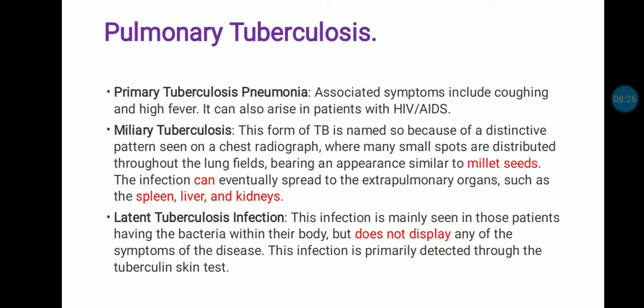The third type under pulmonary TB is latent tuberculosis infection. This infection is mainly seen in patients who have bacteria within their body but do not display any symptoms of the disease. It is primarily detected through the tuberculin test only, because symptoms are not present. All three types are related to tuberculosis of the lungs, hence called pulmonary tuberculosis.